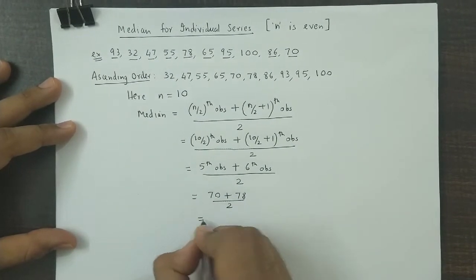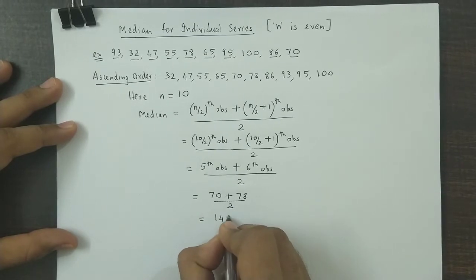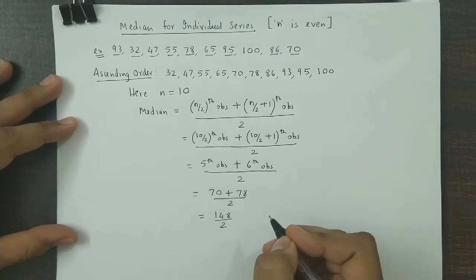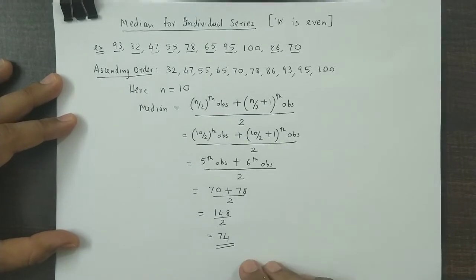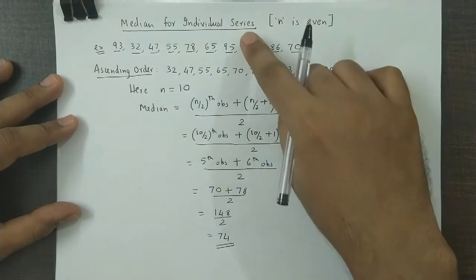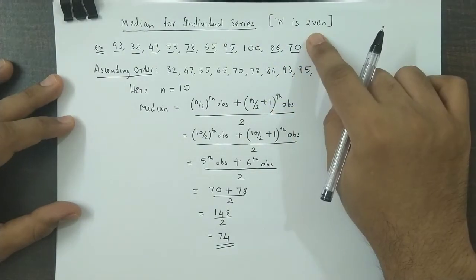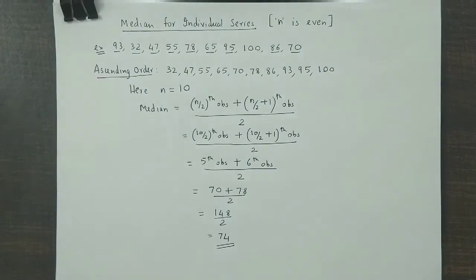Now this total is 148 divided by two, so the final value is 74. So this is how you calculate median for individual series when the number of observations is even.